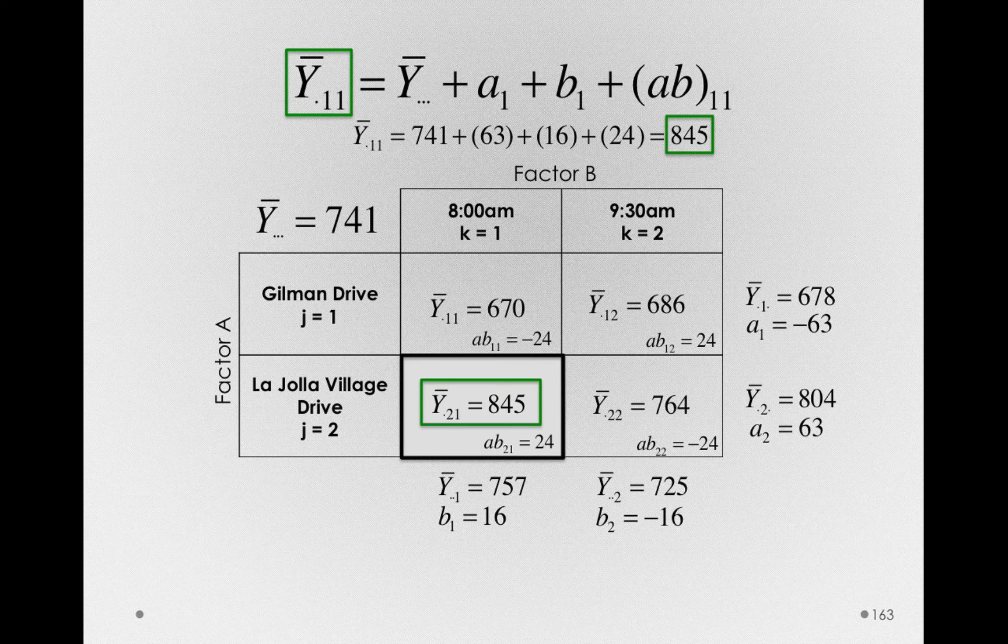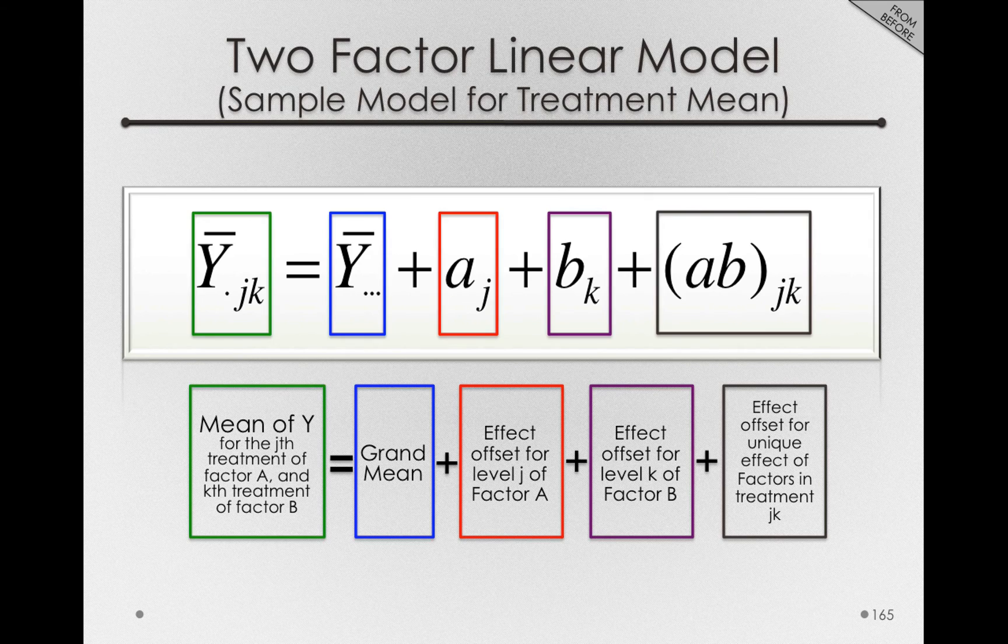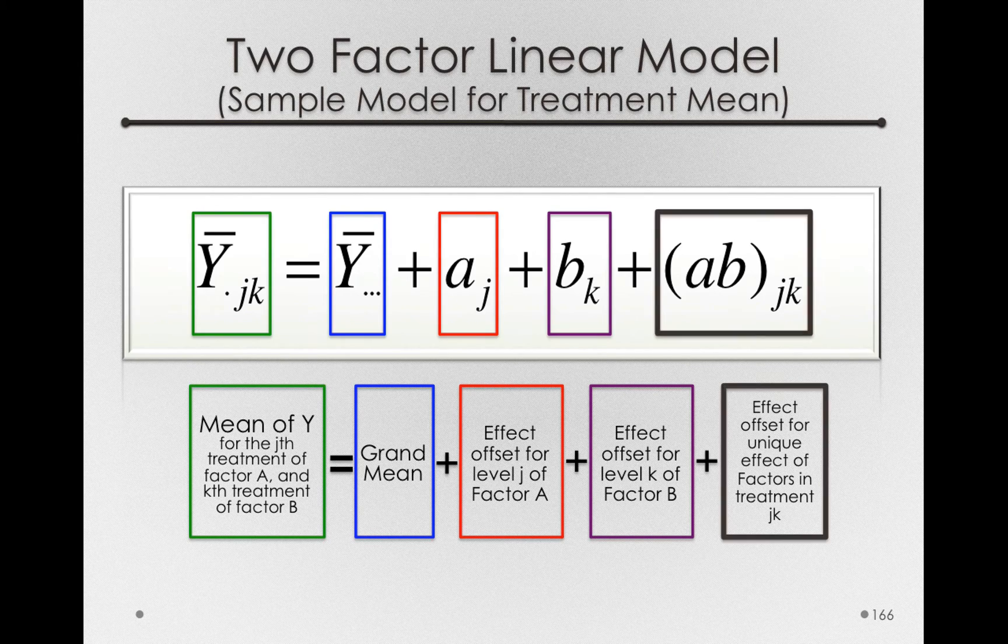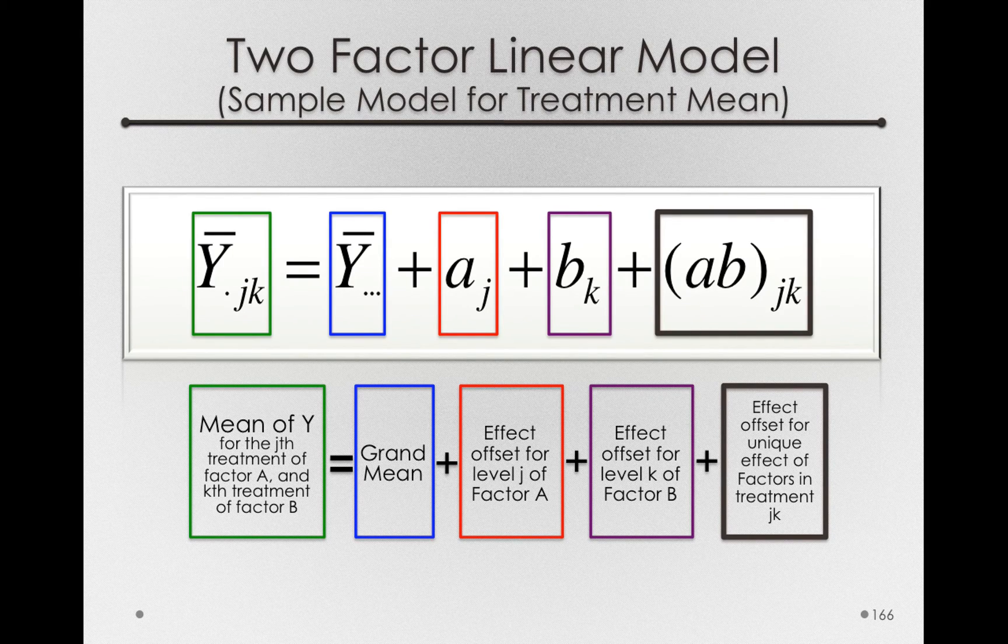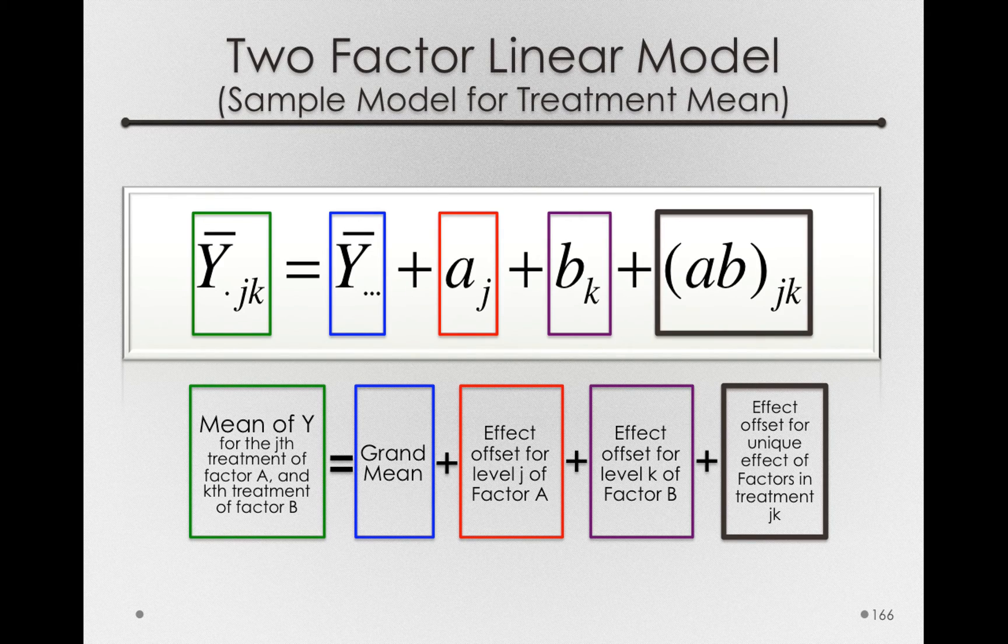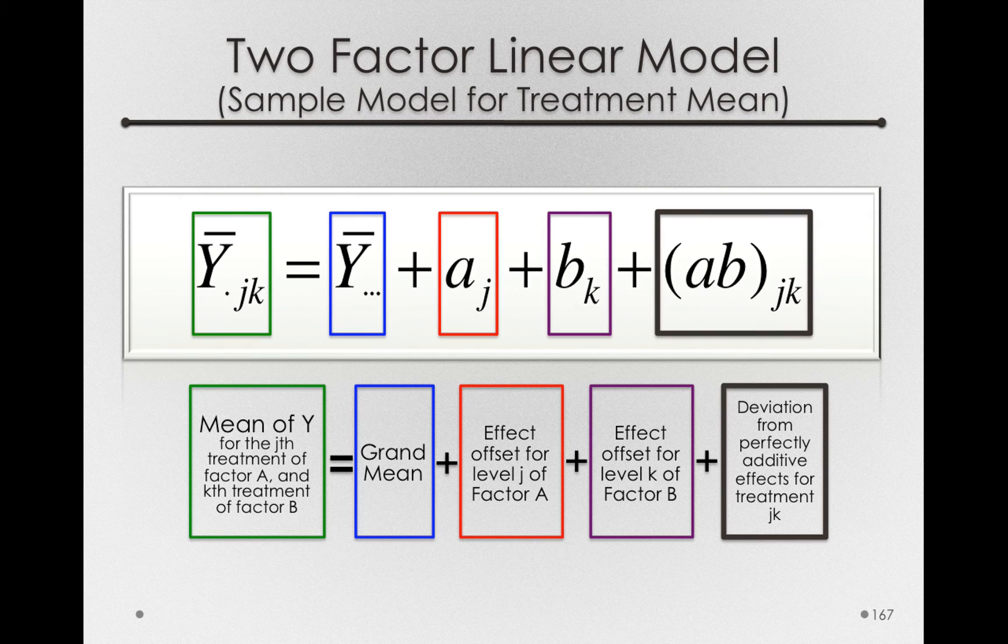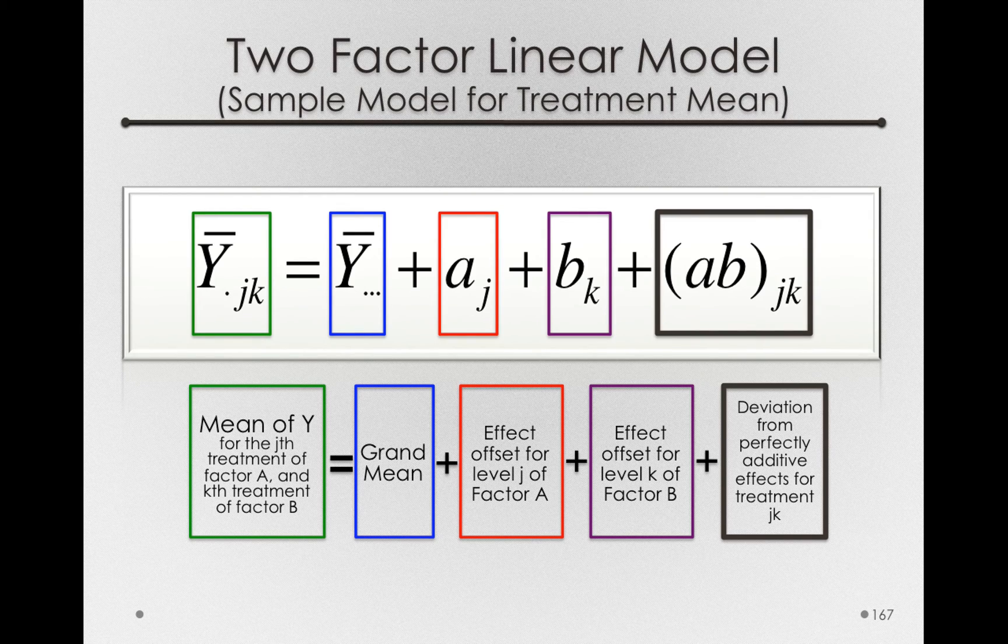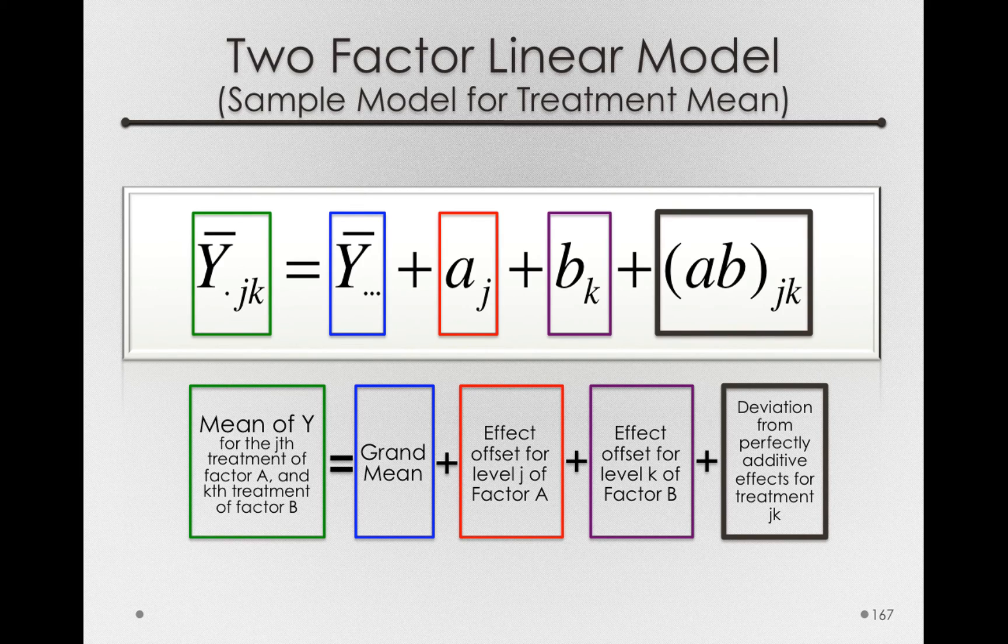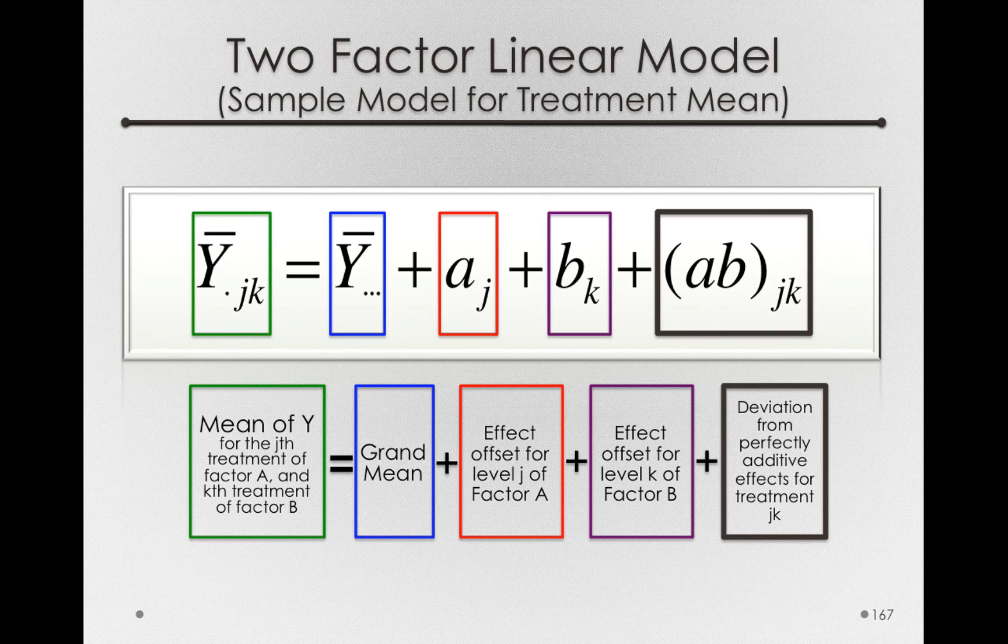So going back to our model definition, our two-factor linear model deconstruction for the treatment means, let me update that ABJK term. I previously described it as the effect offset for the unique effect of factors in treatment JK. But really, we should be specific and talk about this as the deviation from perfectly or purely additive effects for the treatment JK. That is, the degree to which the additive effects of the A's and B's don't perfectly represent a group mean. And we're going to have the ABJK terms whenever there is some interaction in a model.